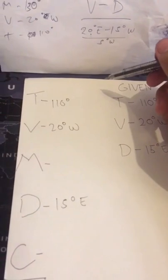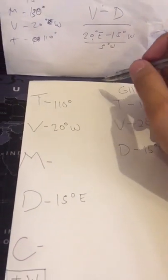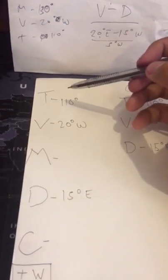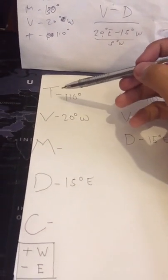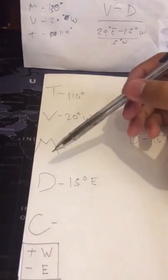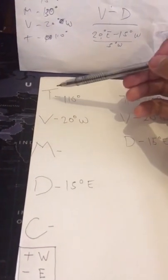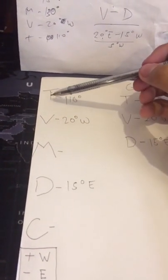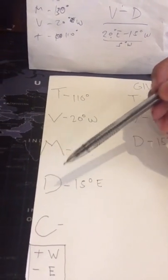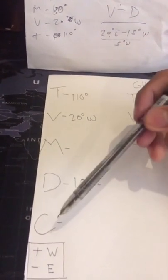In correcting and uncorrecting the compass, we need to remember the initials TVMDC: True course, Variation, Magnetic course, Deviation, and Compass.